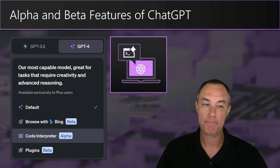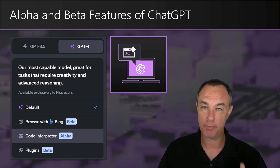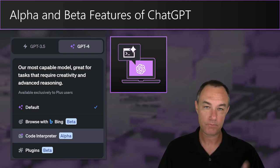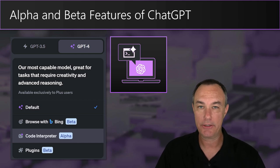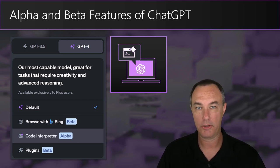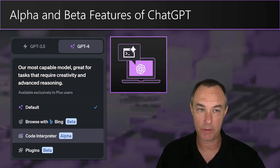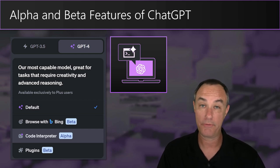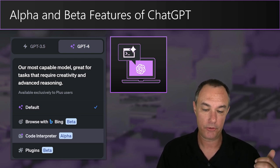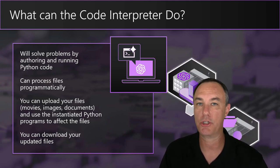It's $20 a month. Recently they pretty much rolled out the plugins capability and browsing with Bing capability to every one of the plus subscribers, as well as GPT-4. The thing we're going to talk about today is not widely available — there are only a few people in my sphere that have access to this. What I'm going to show you is how it works when you do get access. And one of the things that's interesting about it: it isn't just for programmers — it's for regular knowledge professionals.